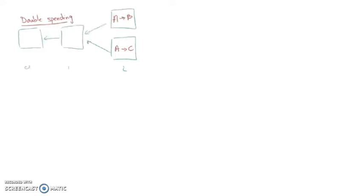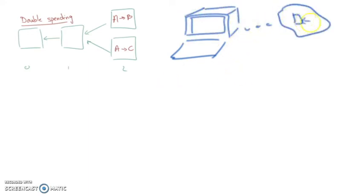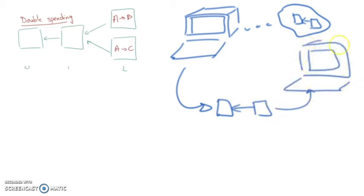To avoid double spending, one can reduce the risks of having forks by increasing the period between the creations of consecutive blocks. If it takes a lot of time for any computer to create a block, it is very likely that this computer creating a new block will have enough time to propagate this new block to the entire network before any other computer could create another block.